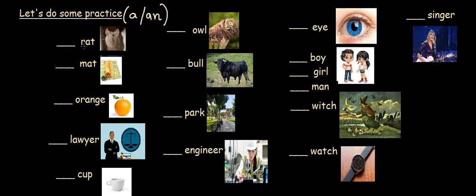Rat. So, rat starts with the consonant r. Therefore, it's a rat. Mat starts with the consonant m. Therefore, it's a mat.